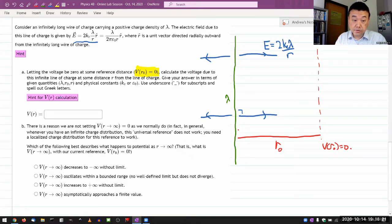It says, calculate the voltage due to this infinite line of charge at some distance R. At some distance R, let's say this point here. At some distance R from the line of charge. Give your answer in terms of given quantity.